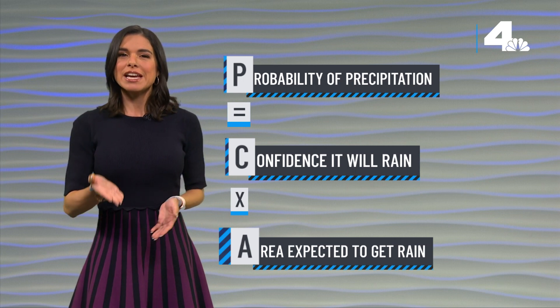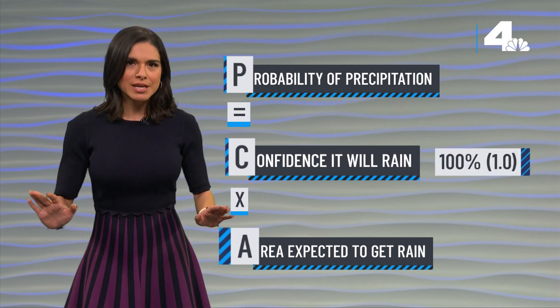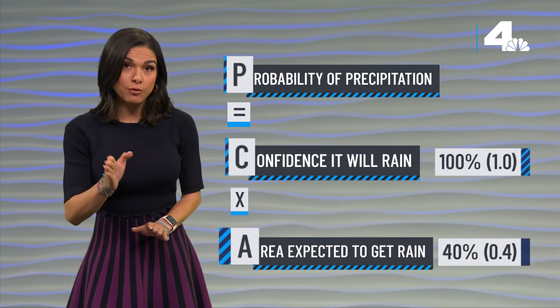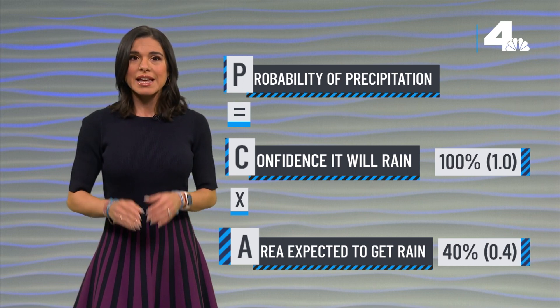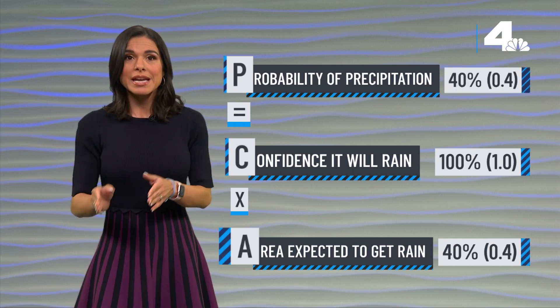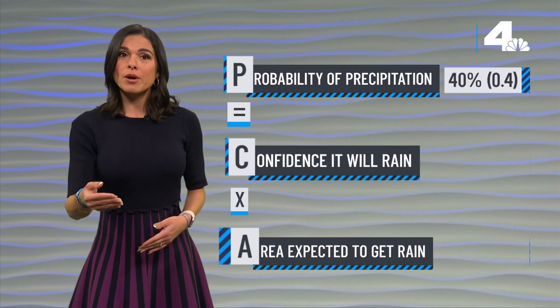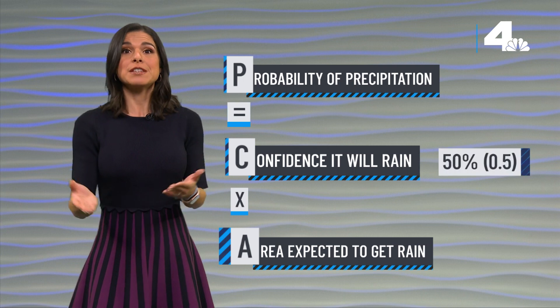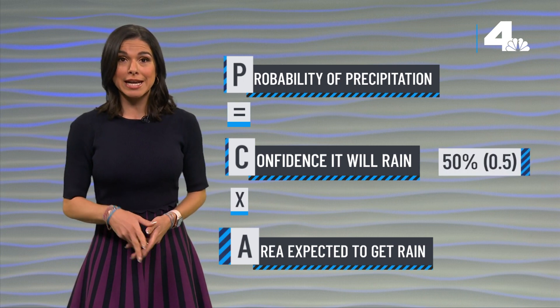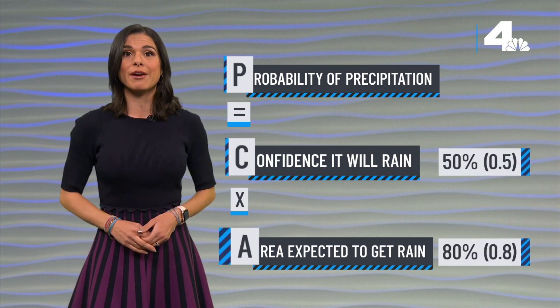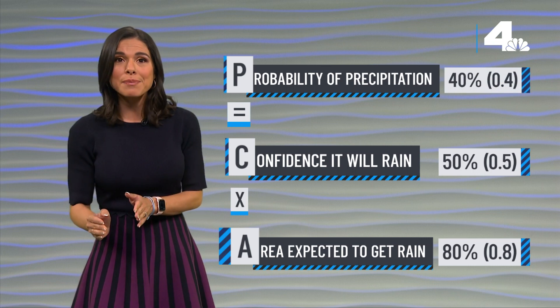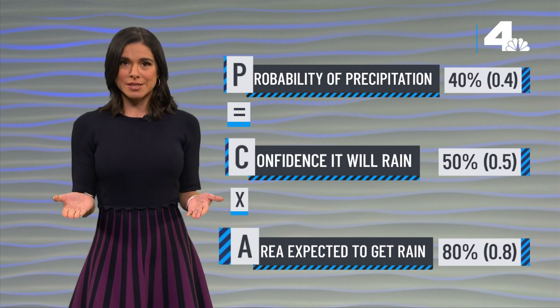For example, if a forecaster is 100% confident that 40% of a given area will see measurable rain, then the POP is 40%. If a forecaster is 50% sure that rain will happen and expects that 80% of the area will get that rain, then the POP is also 40%. So how are those confidence and coverage numbers calculated?